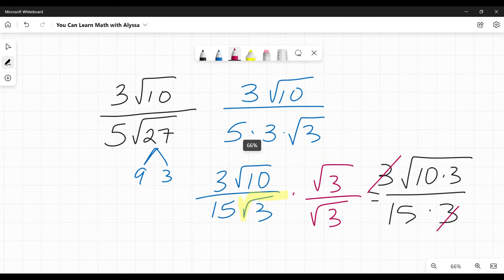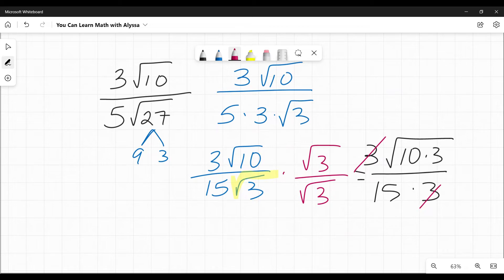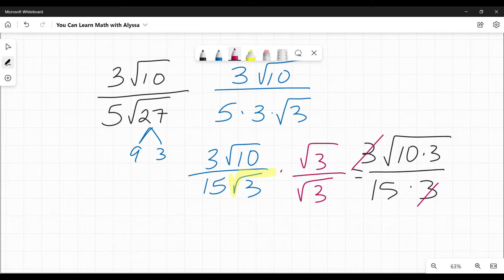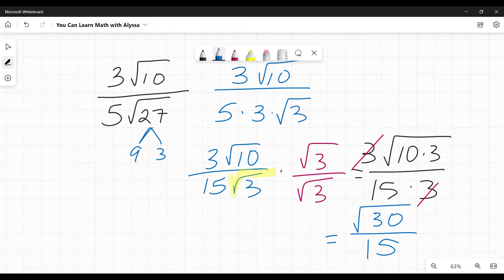And before I do anything else, I'm going to look and go, hey, I got a three on top and a three on the bottom. I can cancel those out. Woohoo. I love canceling. It's a geeky little math joy. I'm just like, ha, less work later. I can cancel you out. You're gone. Random threes. It's amusing me.